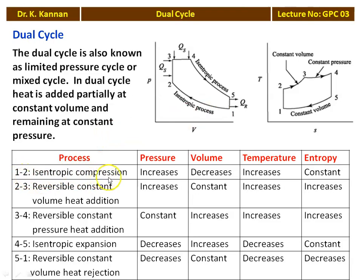Process 1-2 is isentropic compression: pressure increases, volume decreases, temperature increases, and entropy remains constant — a reversible adiabatic process with no heat transfer. Process 2-3 is reversible constant volume heat addition: pressure increases from P2 to P3, volume remains constant, and because of the heat addition, temperature and entropy both increase.